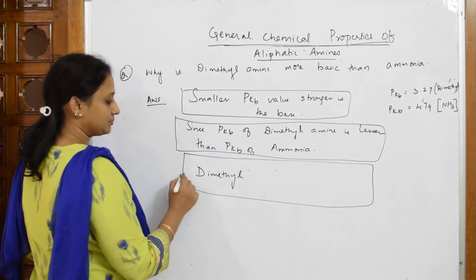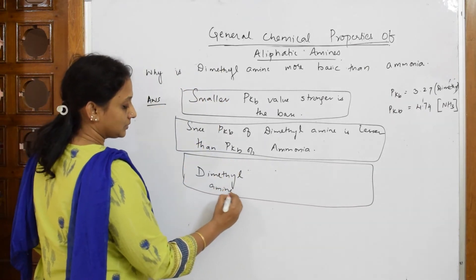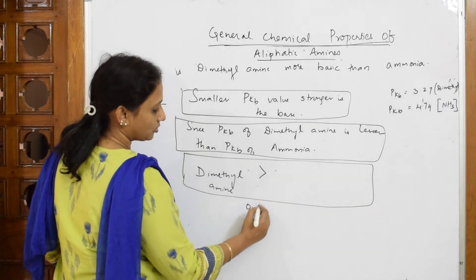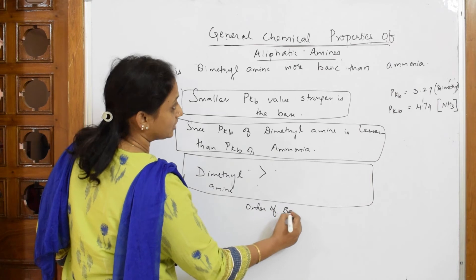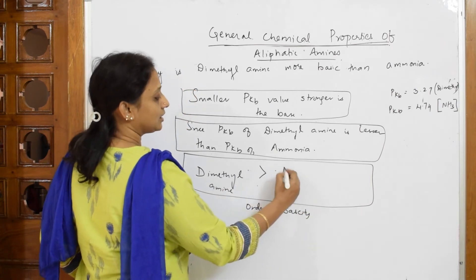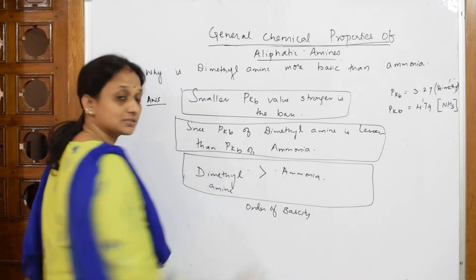Dimethyl amine is more basic. This is your order of basicity. You have to write it down. Order of basicity more basic than ammonia. That's it. This is your answer.